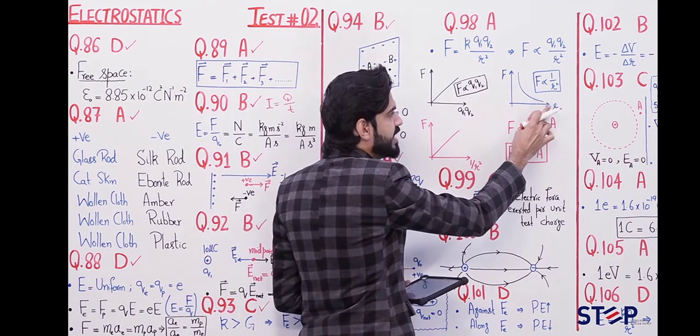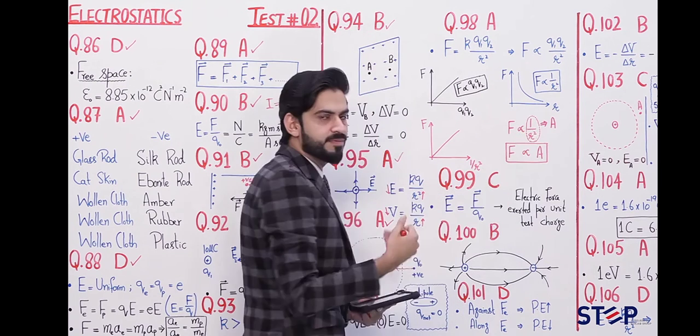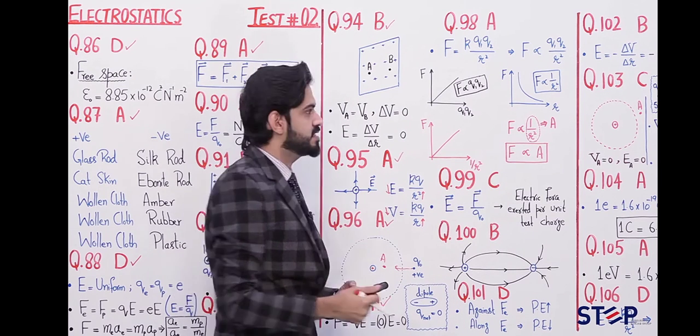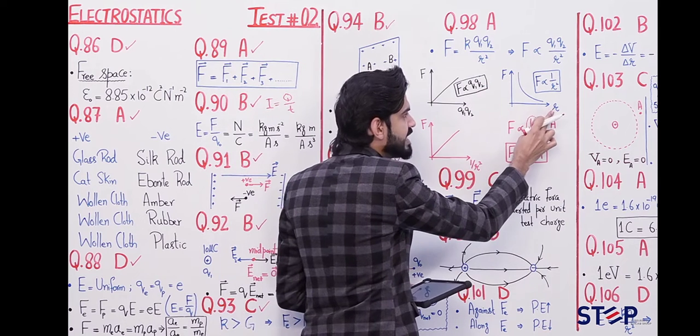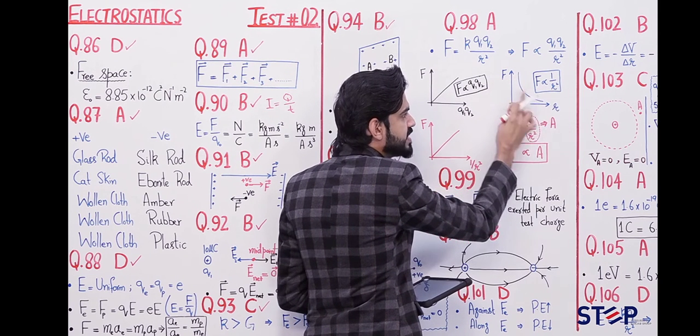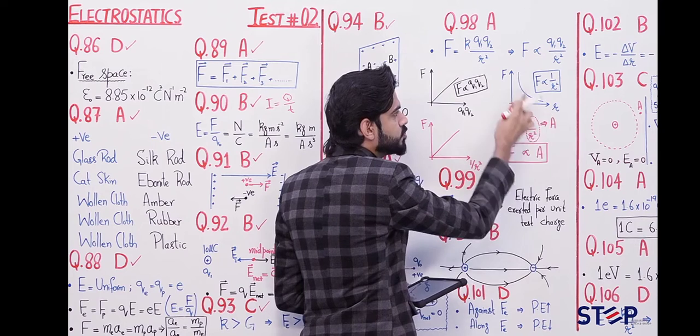If we talk about the graph between f and r, this can also represent distance x. In the statement, it has written x distance. If we talk about f versus r, we know that f is inversely proportional to the square of the distance. So when there are two variables with an inverse relation, the graph comes in the form of a curve.